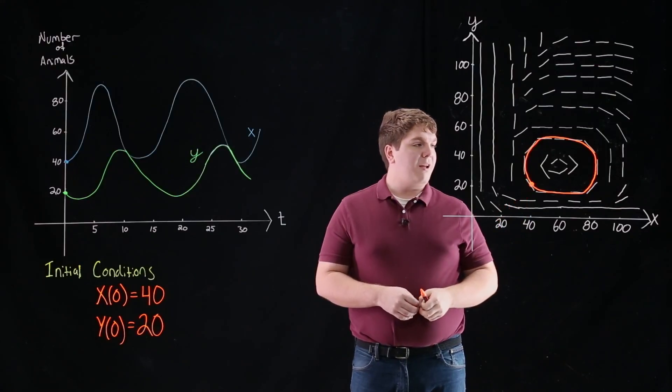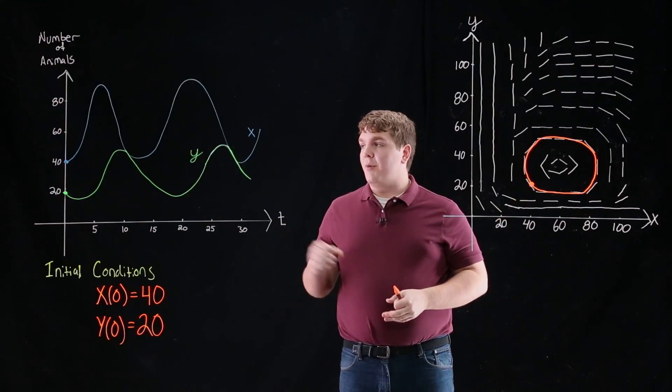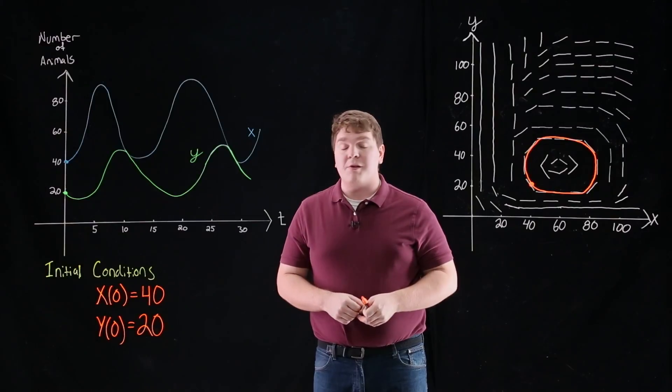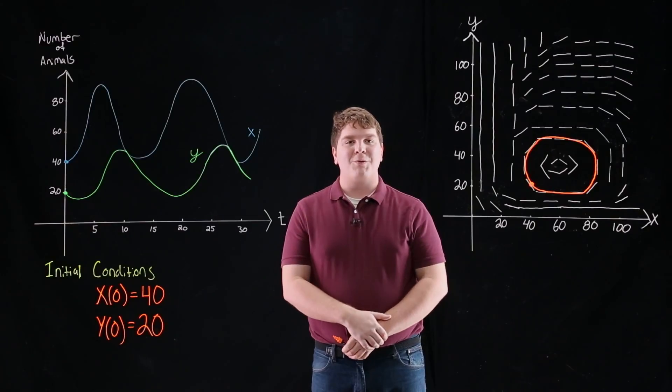So there we have a graph of the solution for this set of predator-prey equations, subject to the initial conditions x of 0 equals 40 and y of 0 equals 20.